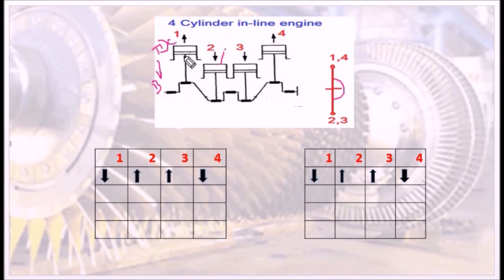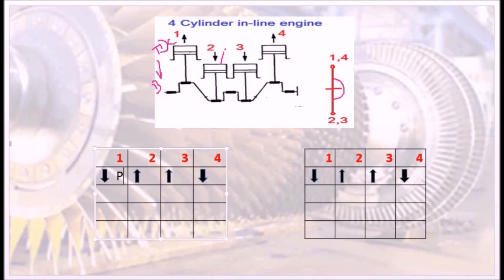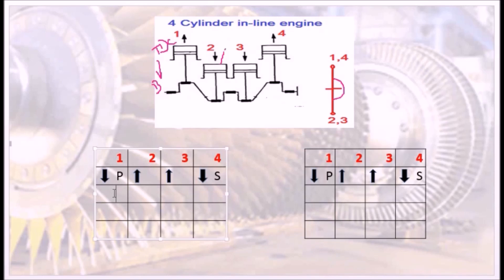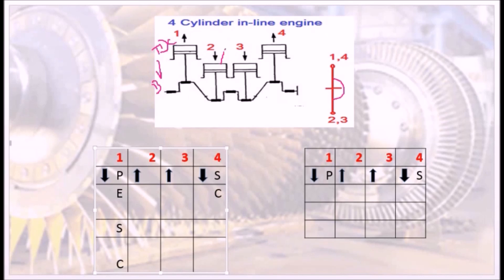We will start the stroke sequence analysis. For the first cylinder: Power Stroke, then Exhaust Stroke, then Suction Stroke, then Compression Stroke. This cycle repeats. For the second cylinder, beginning at a different phase: Compression Stroke, then Power Stroke, then Exhaust Stroke, then Suction Stroke — offset by 180 degrees from cylinder one.